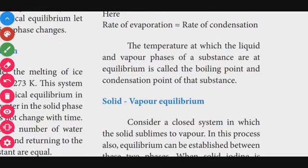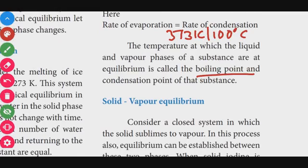At a particular temperature — 373 Kelvin or 100 degrees Celsius — and the corresponding pressure, the liquid phase and vapor phase of a substance are in equilibrium. This condition is called the boiling point or condensation point of the substance. This is another two-mark question.